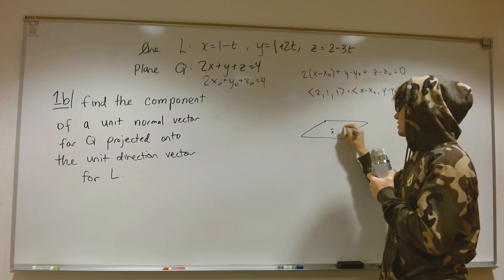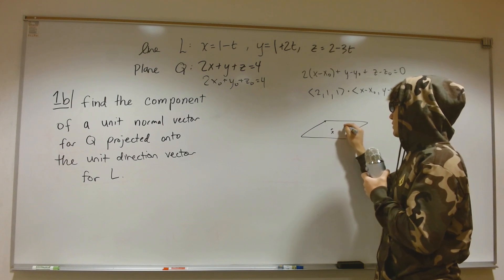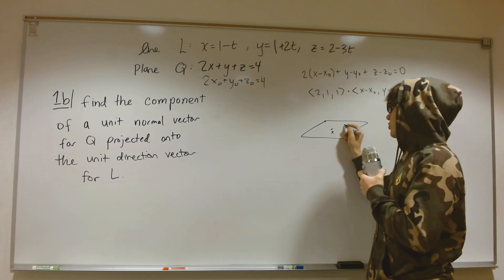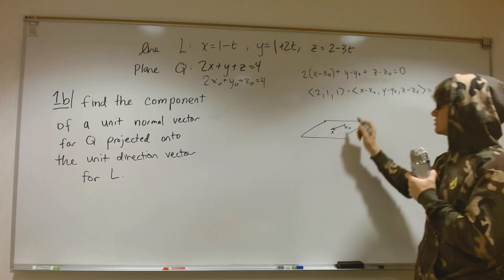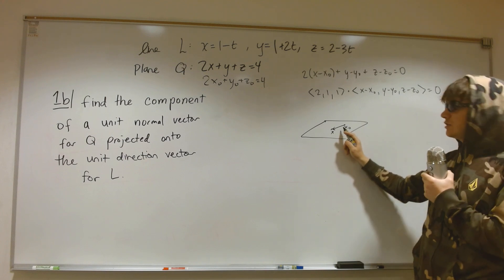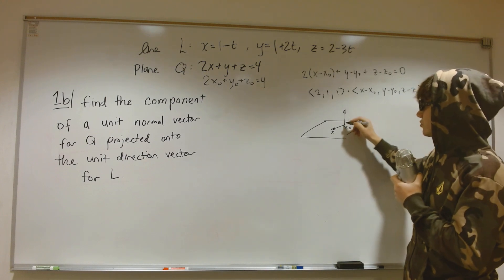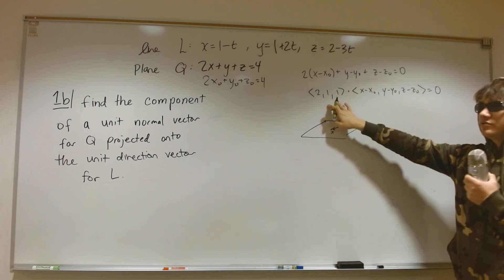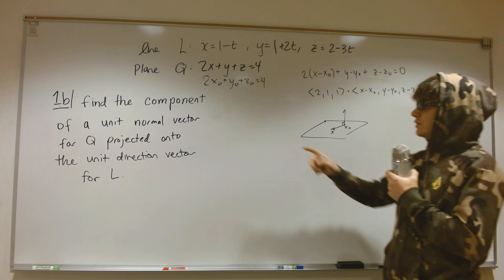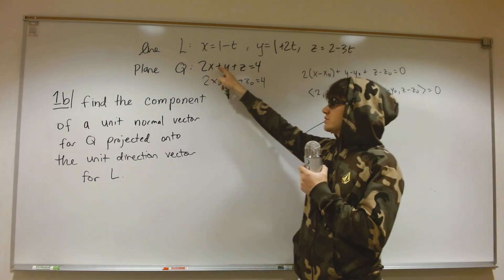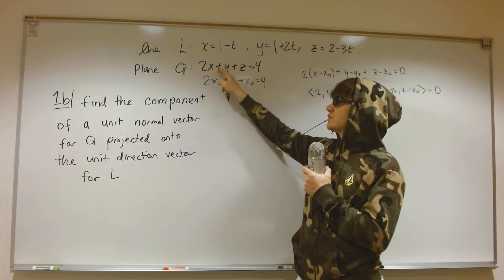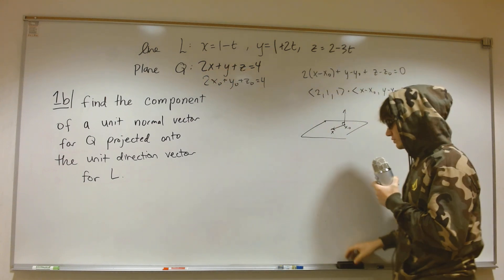If x-naught is fixed, x can be any arbitrary point in the plane. When I subtract these two vectors, I get a vector that lies in the plane itself. When I dot product this with the normal, I always get zero by the definition of the normal vector. So the coefficients of the normal vector in this form of the plane equation are literally just the coefficients of x, y, and z.